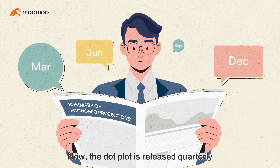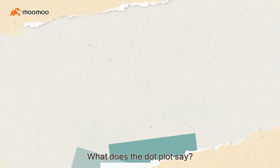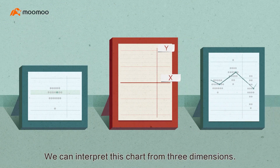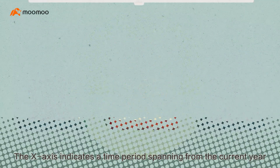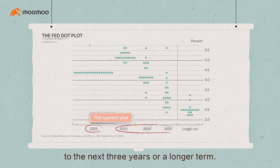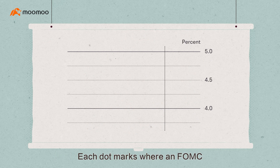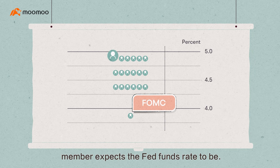The dot plot is released quarterly in the Summary of Economic Projections. We can interpret this chart from three dimensions. First, let's start with the basics. The x-axis indicates a time period spanning from the current year to the next three years, or a longer term. The y-axis represents the federal funds rate.